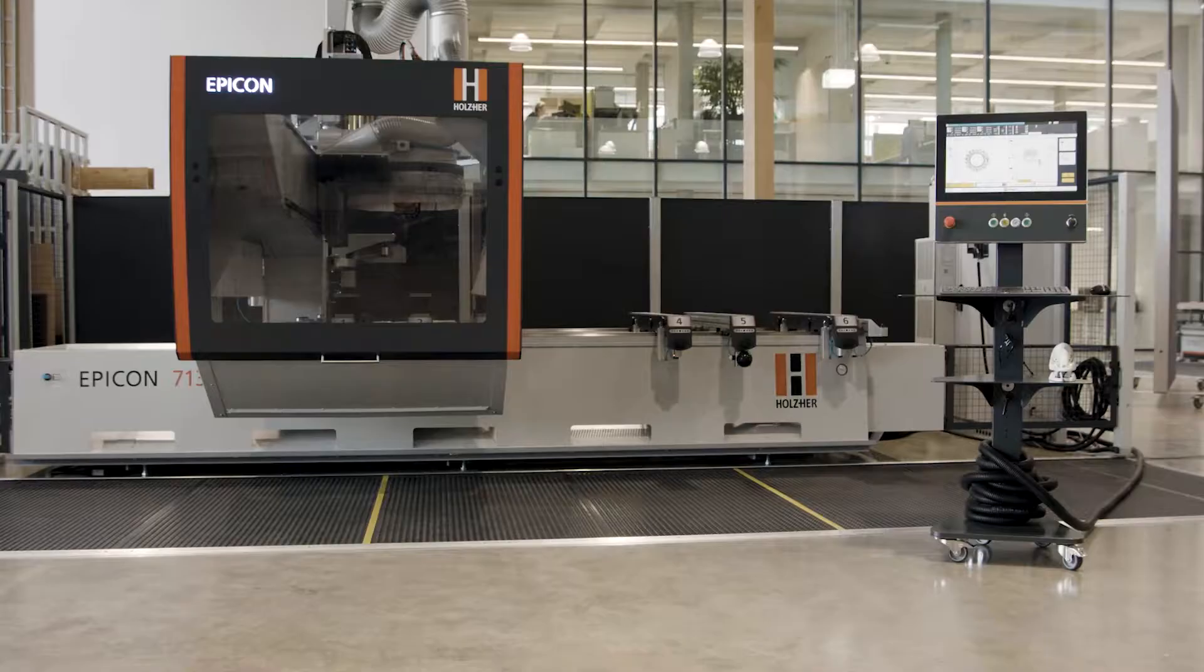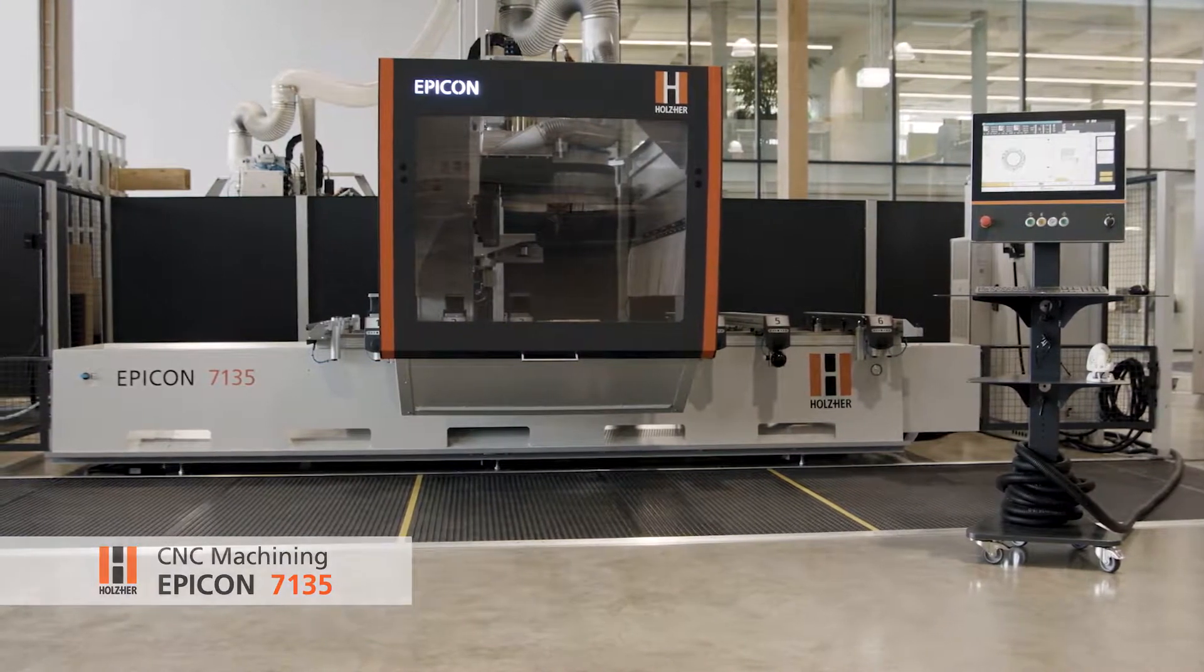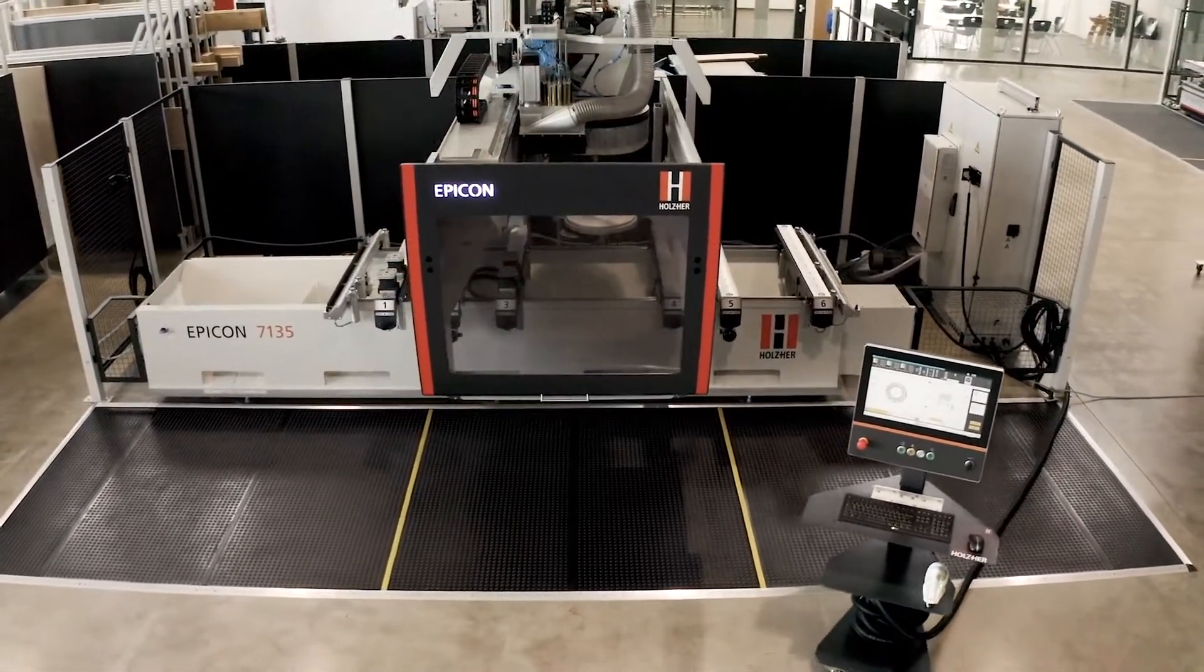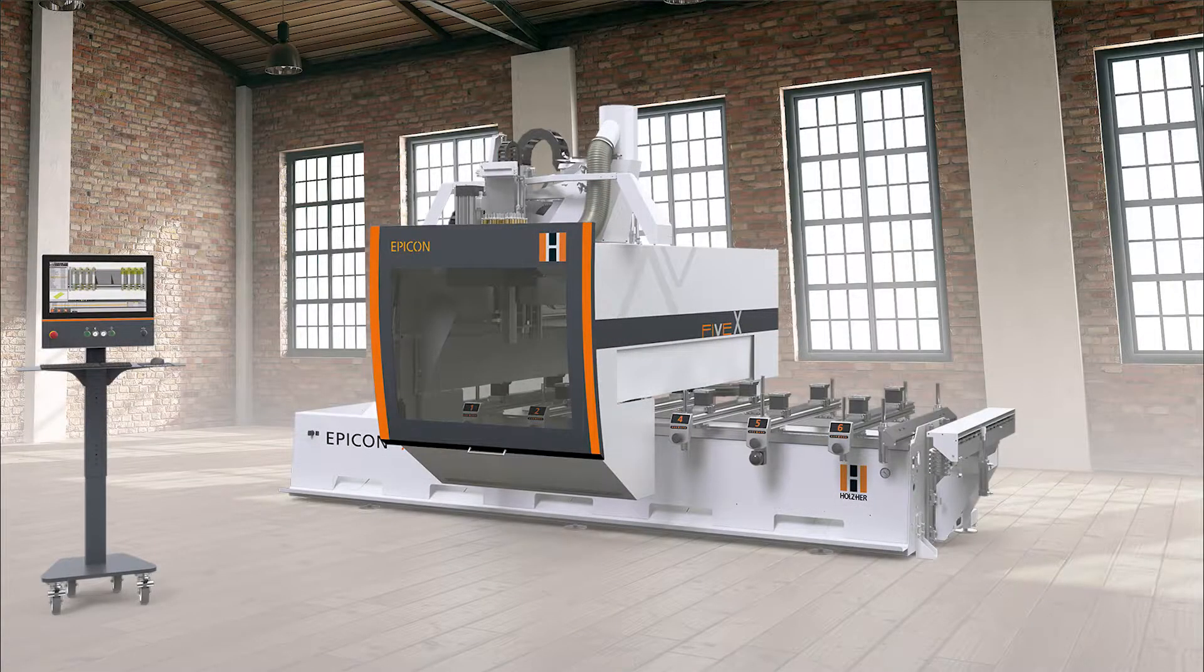The Epicon 7135 is the ideal entry into professional 5-axis machining of panel material and solid wood. Generous machining dimensions and the flexible equipment options of the Epicon 7135 leave nothing to be desired.